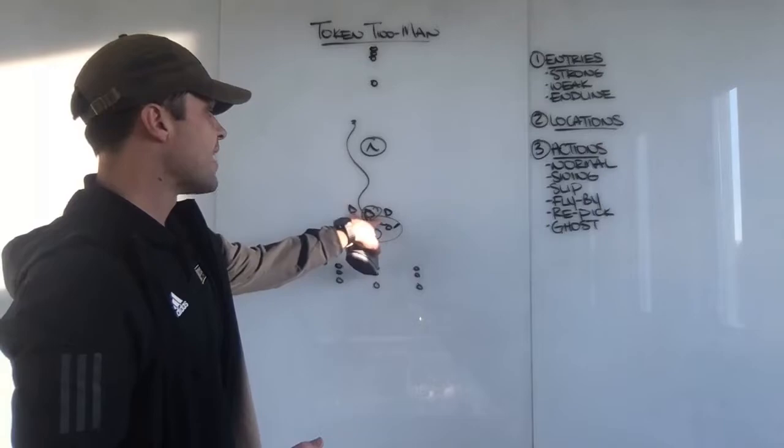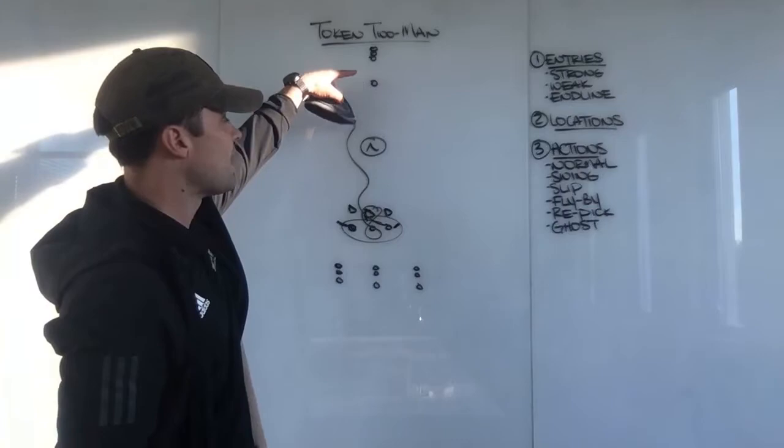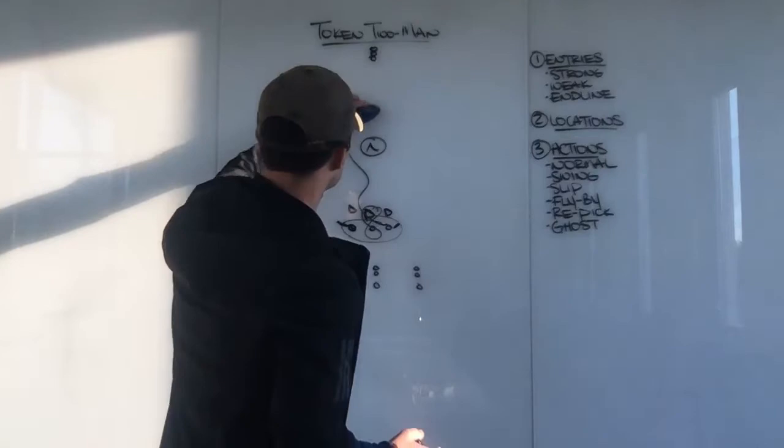Then how the rotation works is the two offensive guys that did not get the ball become defenders, the guy that set the pick becomes an initiator behind, and then the initiator behind comes up into the up-top piece.